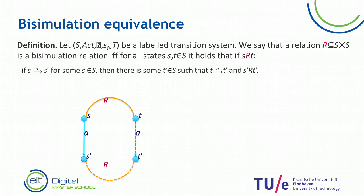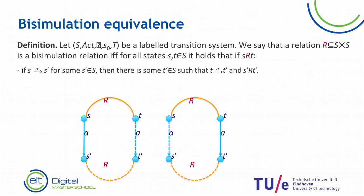The definition of bisimulation also obliges you to check the other side. If we take two states that are related and we can do a step from T, then it should be possible to mimic that by S, such that the endpoints are again related.